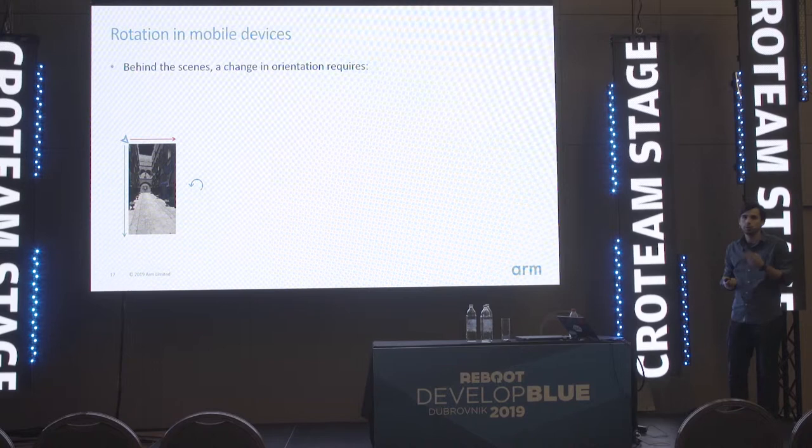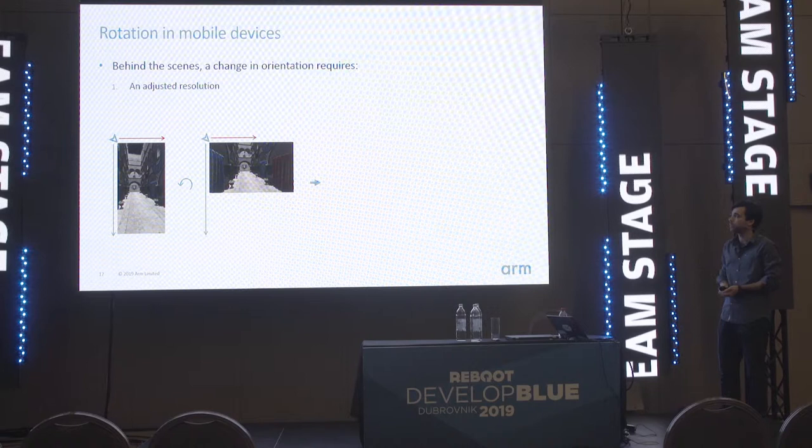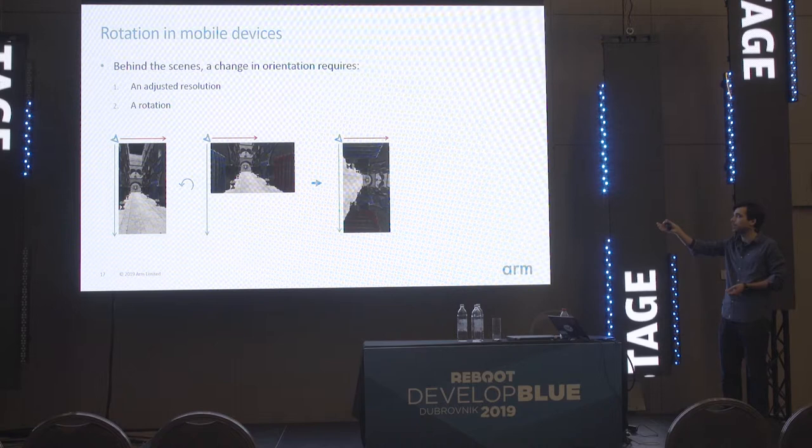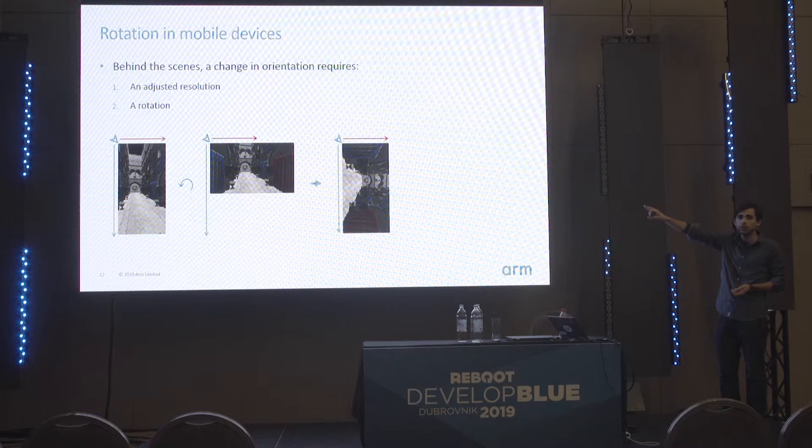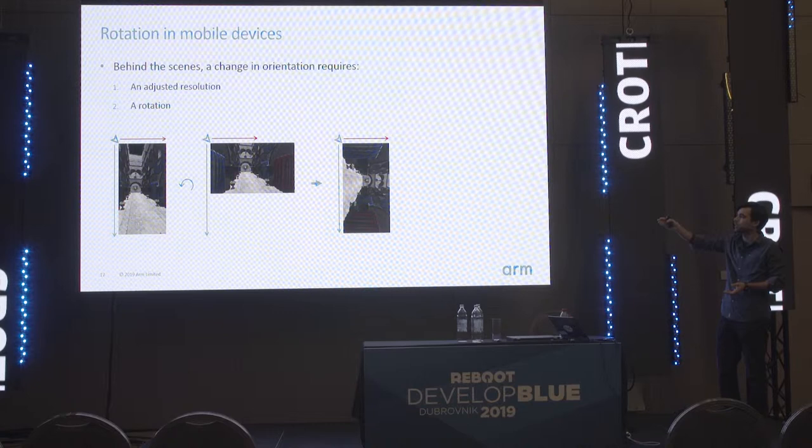Let me break it down. When we rotate the device, two things must happen in the background. First, there is a change in resolution. But unless we manipulate the image to adapt to this new orientation, the display processor will try to draw from the original origin, meaning it will have to either stretch the image or crop it to fit in the renderable area.